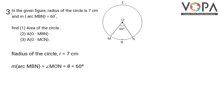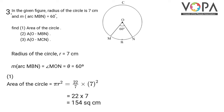We will first find the area of the circle using the formula πr². Putting the values, we have 22/7 into 7 squared. We can cancel one 7 from the numerator and one from the denominator, leaving 22 into 7, which gives 154 square cm.